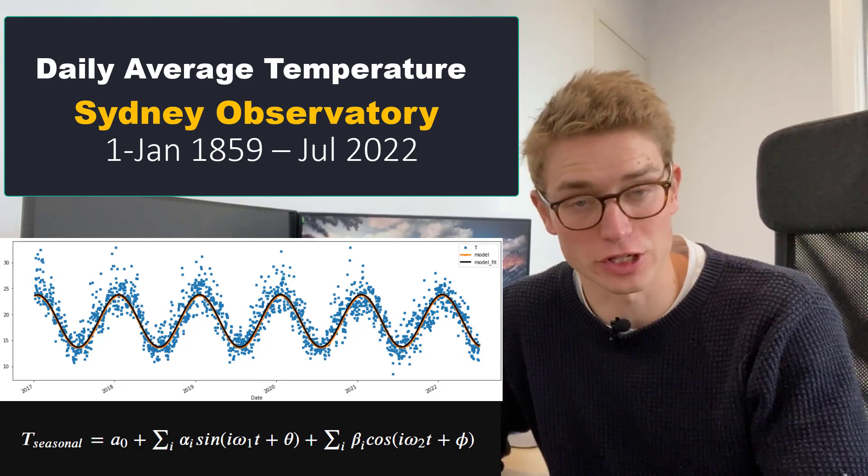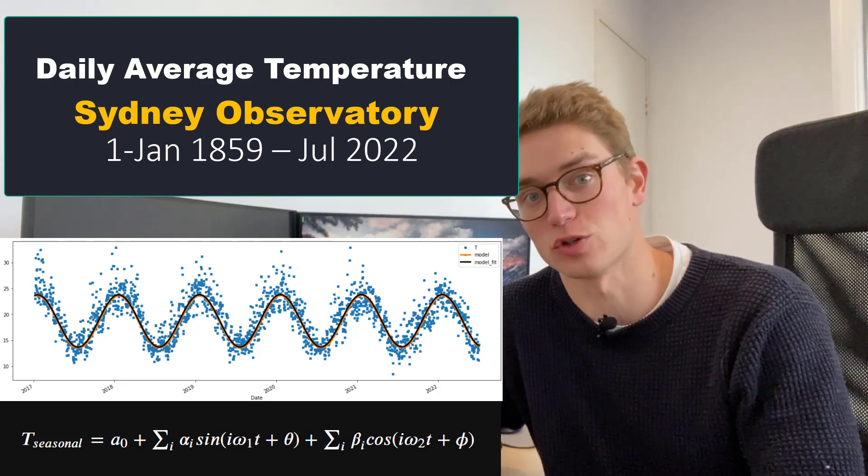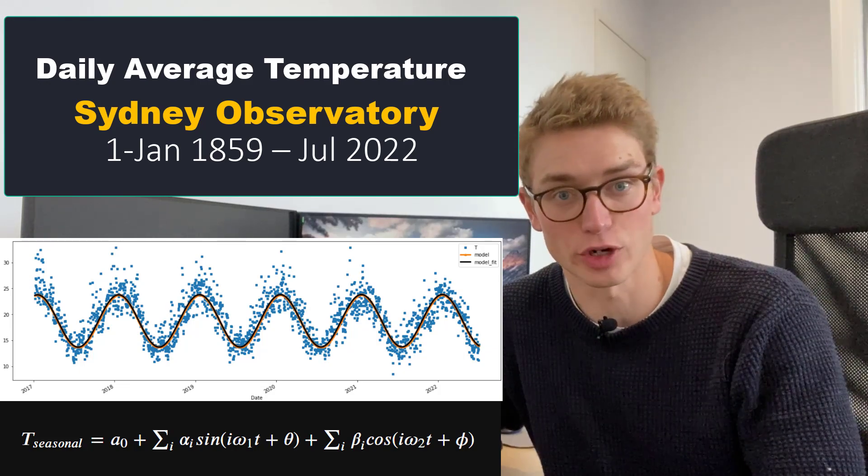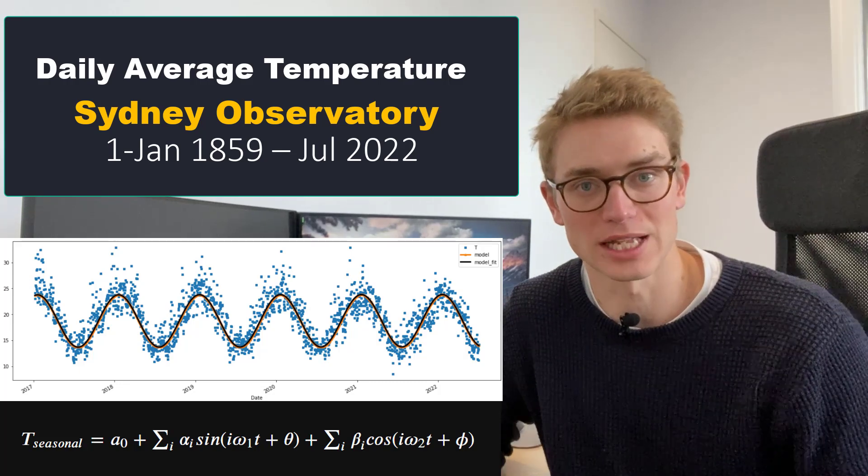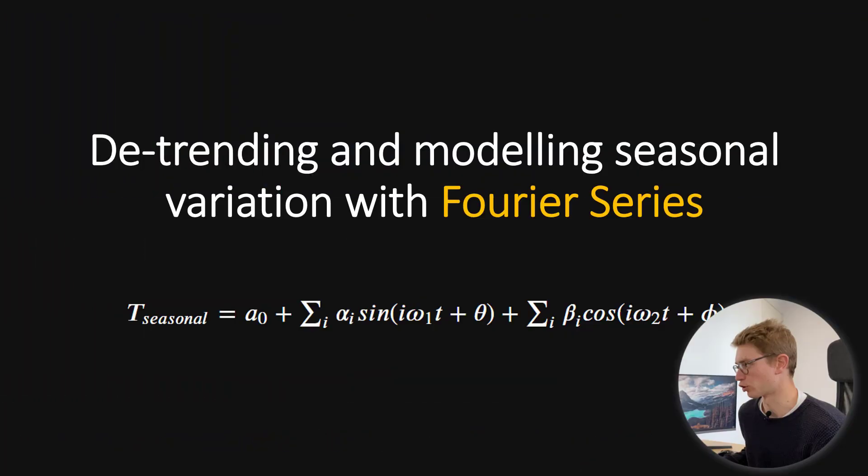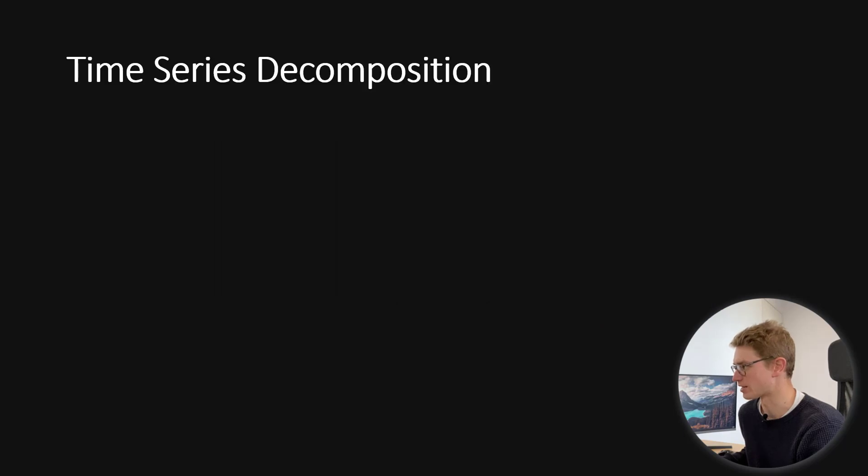Because our choice is going to be a first-order Fourier series, we're actually able to use non-linear least-squared regression to estimate these parameters of the model. So without further ado, let's jump into it. Detrending and modeling seasonal variation with Fourier series.